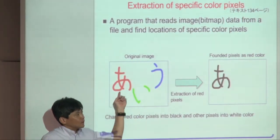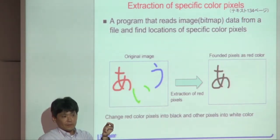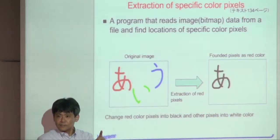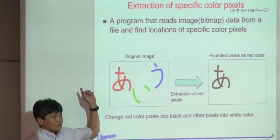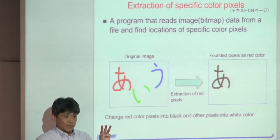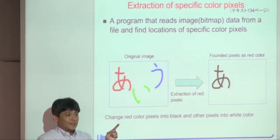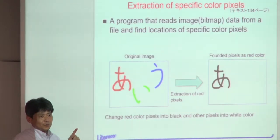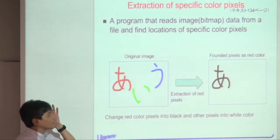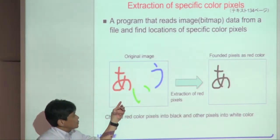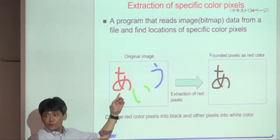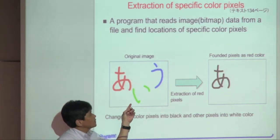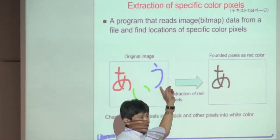An image file consists of several pixels. Each pixel has three data values: RGB color data. Each pixel consists of three bytes — red, green, and blue each take one byte, so totally three bytes per pixel. The program finds the red color pixels and changes them to black. Other pixels are changed to white.